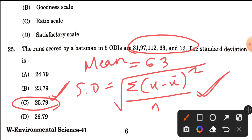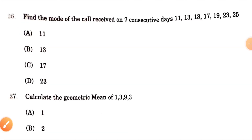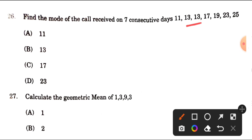Question number 26: Find the mode of the calls received on seven consecutive days: 11, 13, 13, 17, 19, 23, 25. Mode is calculated as the value with the highest frequency in a dataset. Here, 13 appears twice — the highest repetition — so the mode is 13.